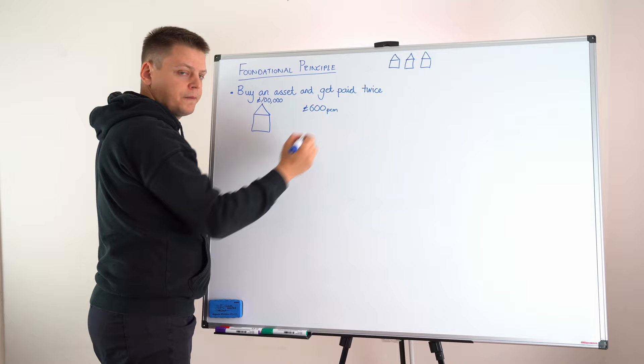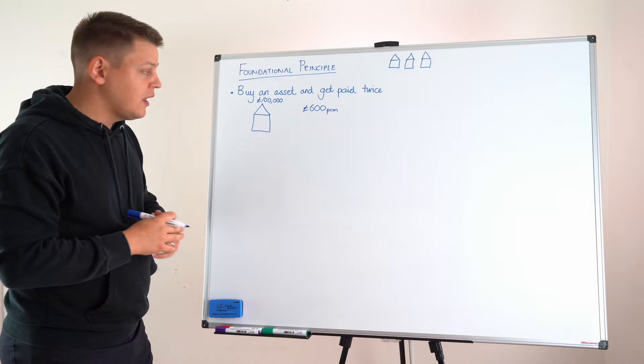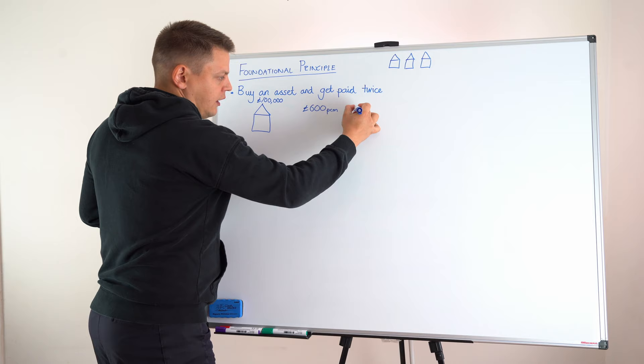And every month you receive £600. There's going to be, in this example, absolutely no costs. You have £600 clear profit every single month. And let's say they stay there for a year. So by the end of the year, you have now received, in rental payment, £7,200.